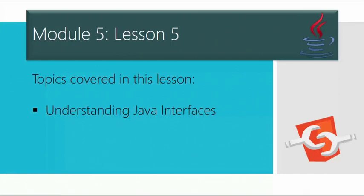Importantly, interfaces are used for abstraction. Since methods in interfaces do not have a body, they have to be implemented by a class before you can really access them. The class that implements an interface must implement all of the methods of that interface. Also, Java does not support multiple inheritance, but a class can implement more than one interface.